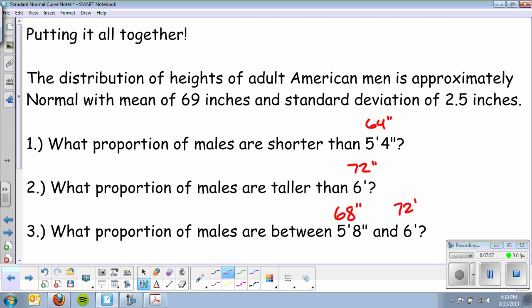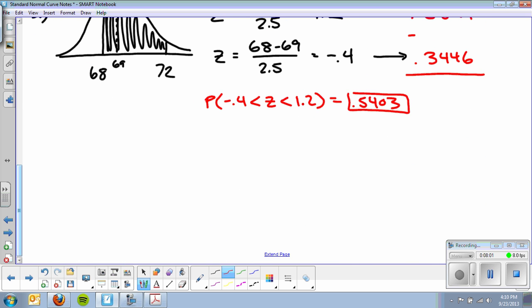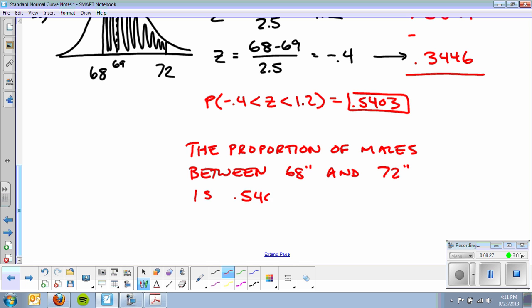All right, and then in the context, the proportion of males between, would we say 68 inches and 72 inches, is 0.5403.